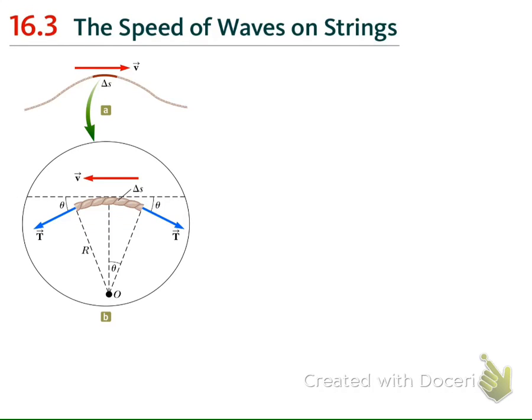So far, we have discussed the mathematical properties of the traveling waves in general. Now in this section, we will discuss the more specific problem and the more physical problem — that is the speed of the waves on the strings.